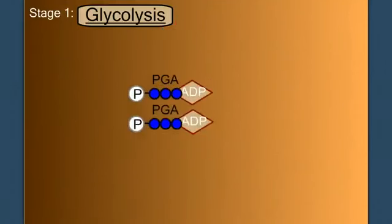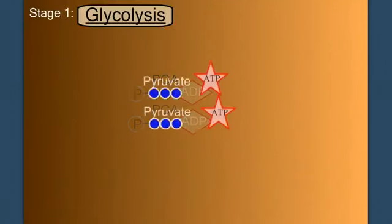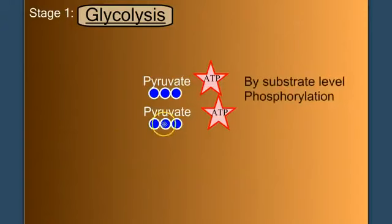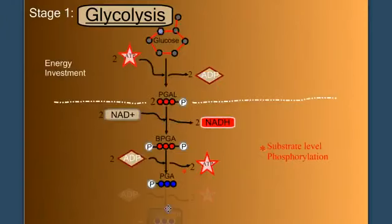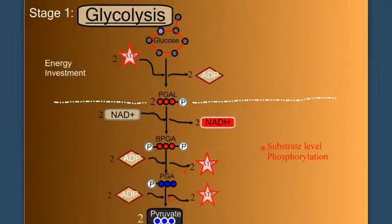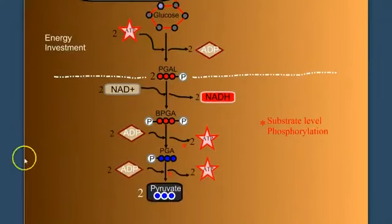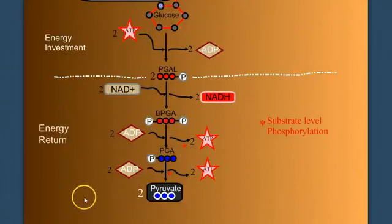The two phosphoglycerate then phosphorylate another two ADP into two more ATP, again by substrate-level phosphorylation. And we end with two molecules of pyruvate. So let's finish this out. The two PGAs phosphorylate ADP into ATP, producing two pyruvate. So in this second stage, we've made four ATP. So we call this our energy return stage. We have a net profit of two ATP.